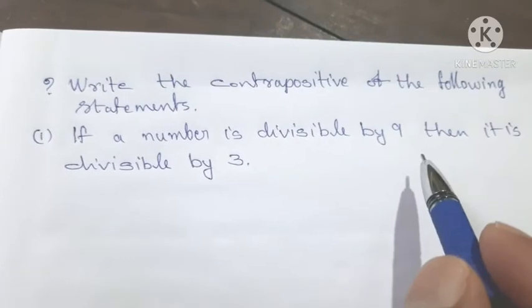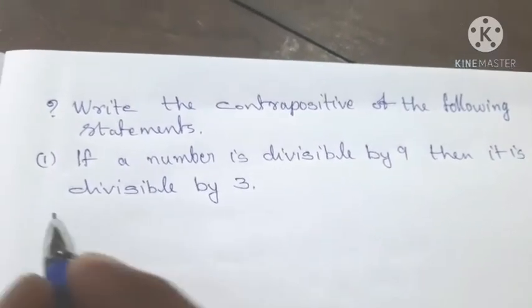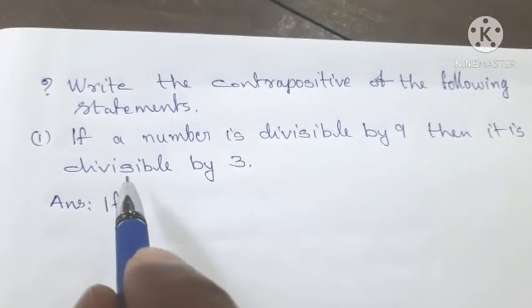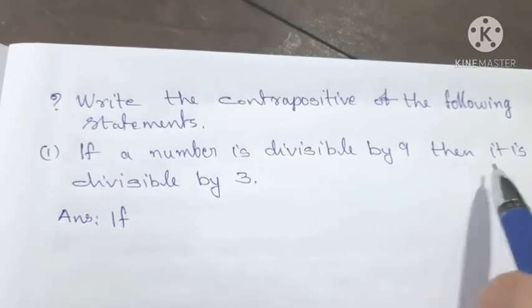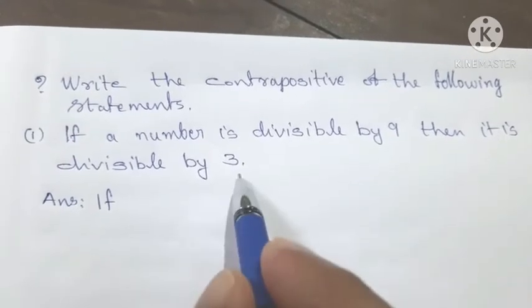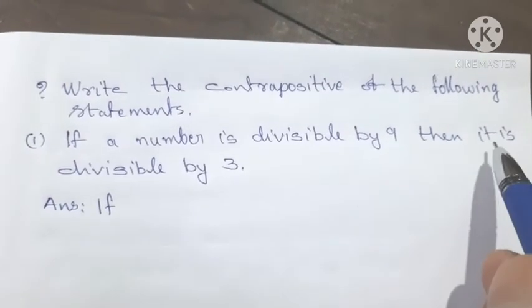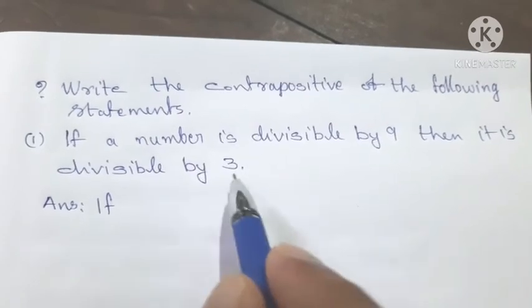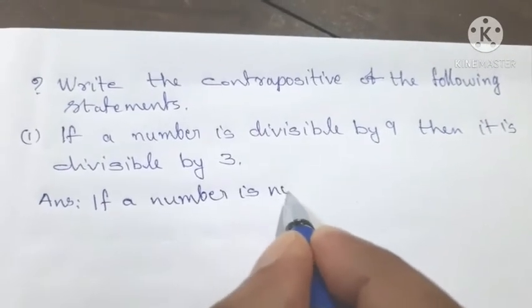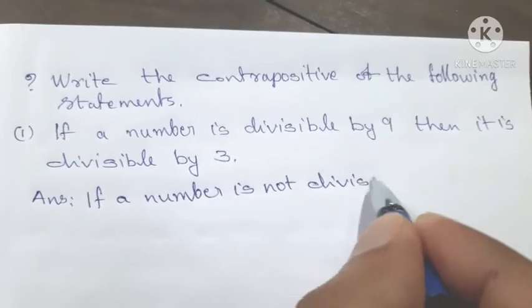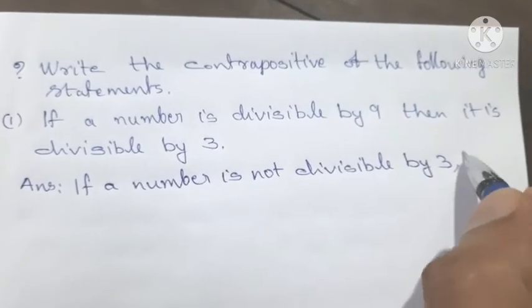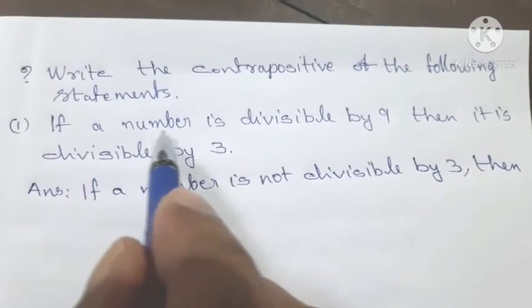If a number is divisible by 9, then it is divisible by 3. The contrapositive: if a number is not divisible by 3, then a number is not divisible by 9.